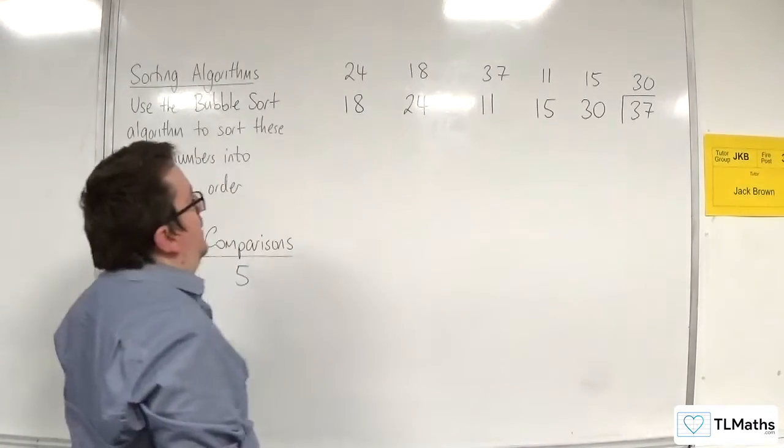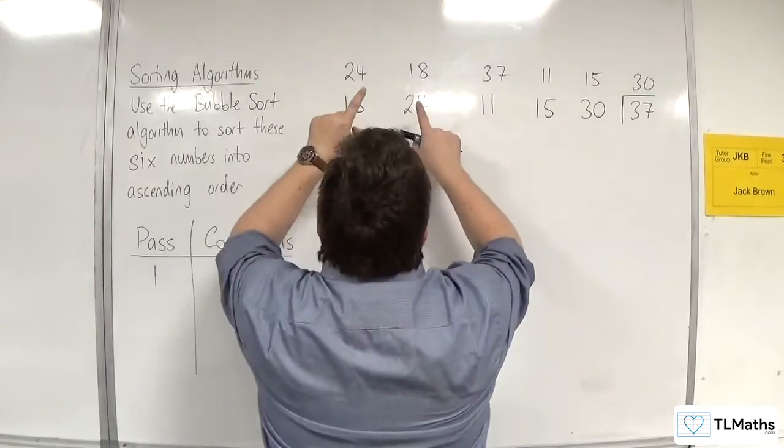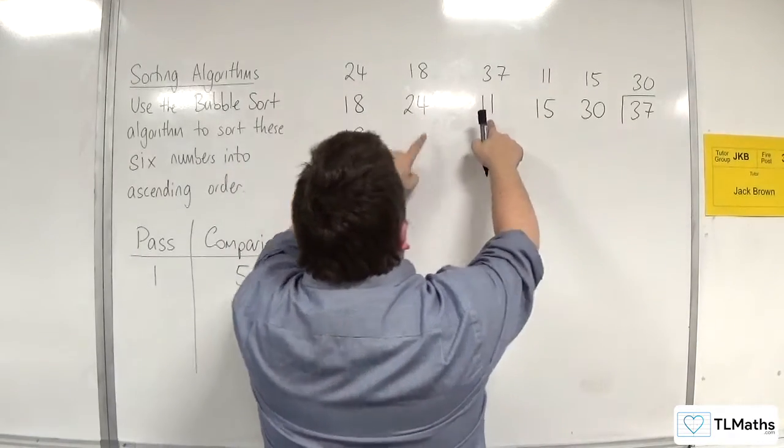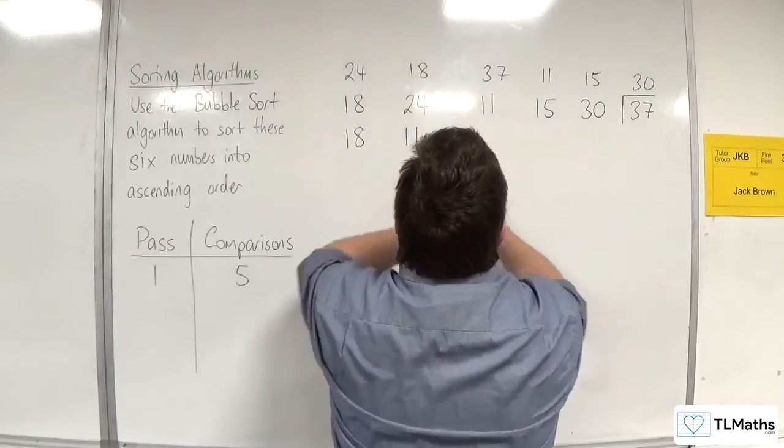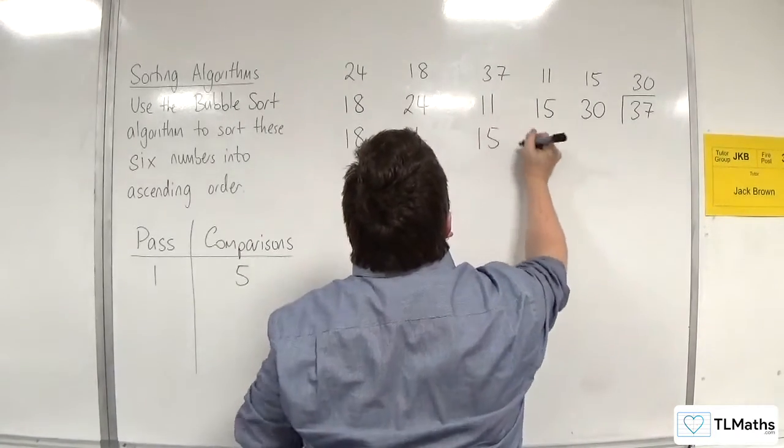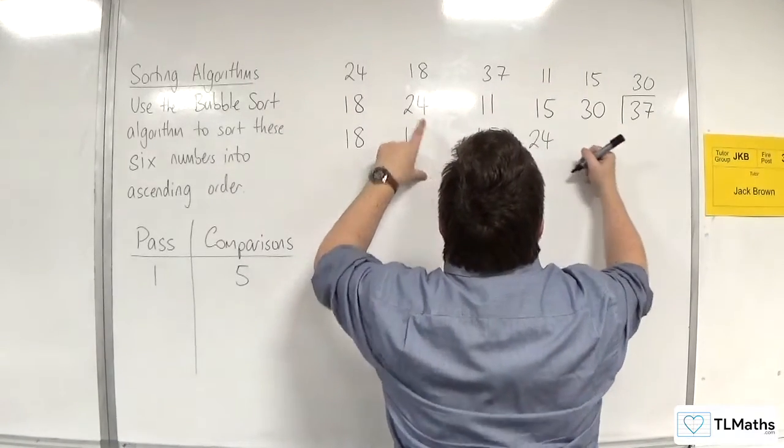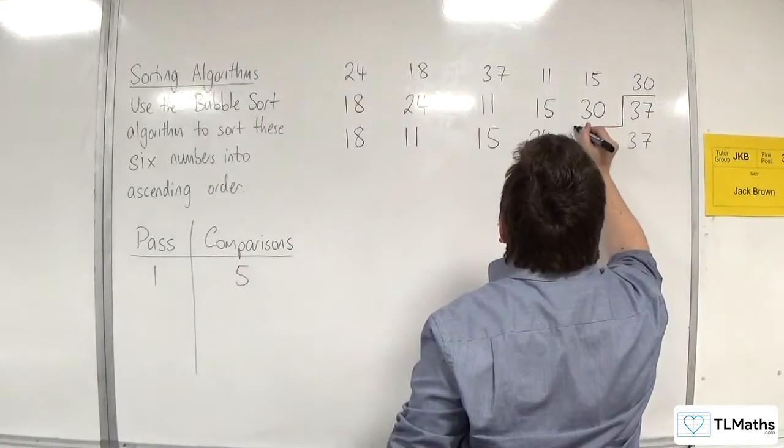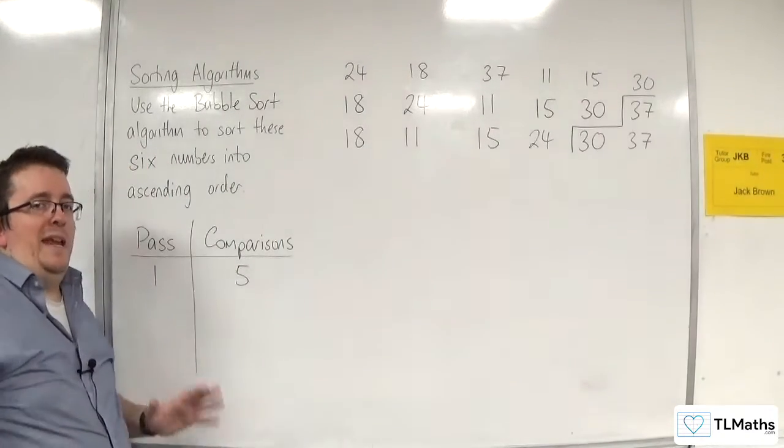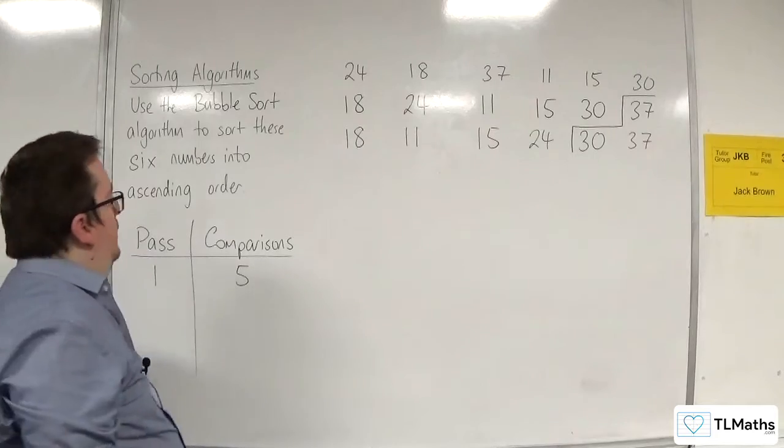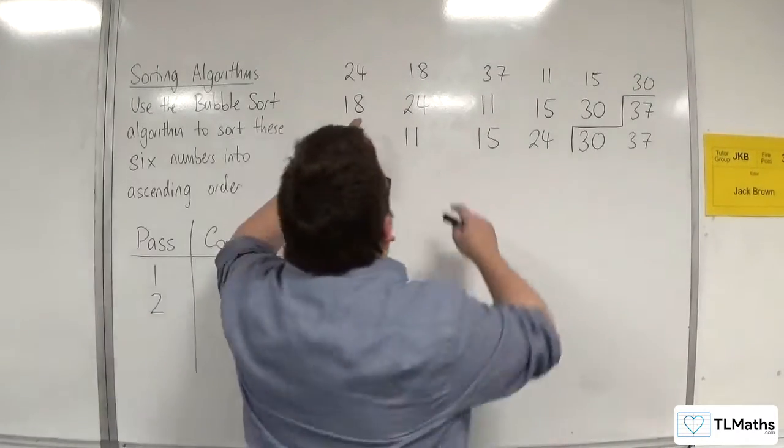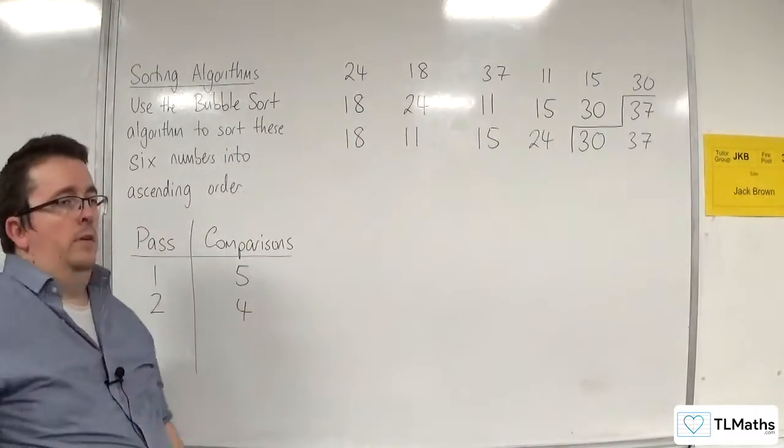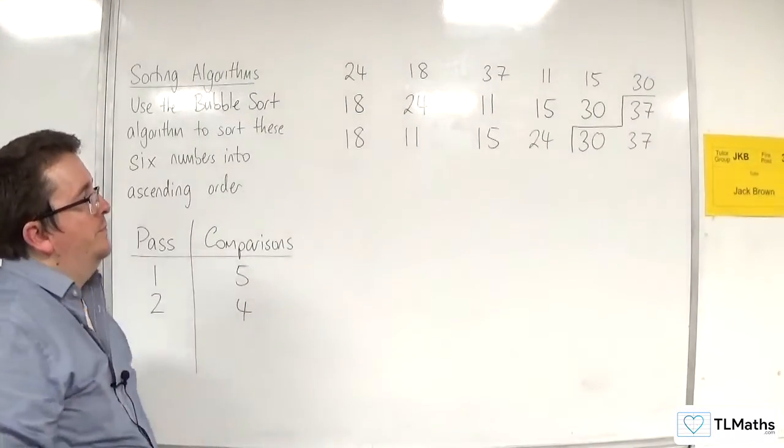So now we go to our next pass. So we start off with 18 and 24. So 18 is smaller than 24, so 18 gets pushed there. Then 24 and 11. Well, 11 is less than 24, so they switch position. And we're now looking at 24 and 15. So 15 is less than 24. And then we look at 24 and 30. Well, 24 is less than 30. And 30, although it was already at the top, has been bubbled to the top. So now 30 and 37 we know are in correct position. So we don't need to consider them anymore. We cap them off. So in the second pass, we made one, two, three, four comparisons. One less than the number of numbers in the list.